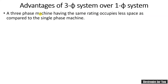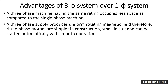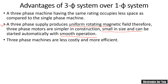Note that the word 'machine' is used here, which indicates a motor as well as a generator. The next advantage is that a three-phase supply produces a uniform rotating magnetic field, and therefore three-phase motors are smooth in operation, self-starting, and smaller in size as compared to single-phase motors.